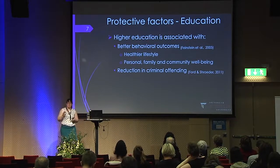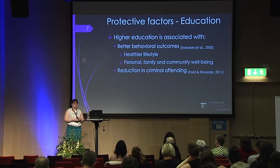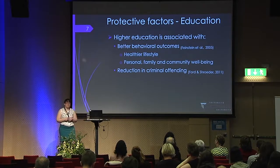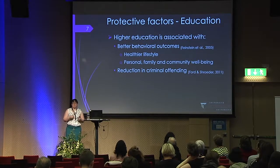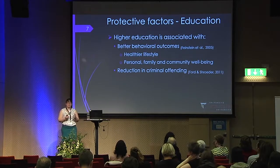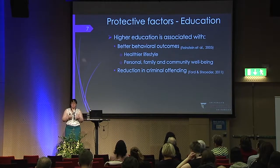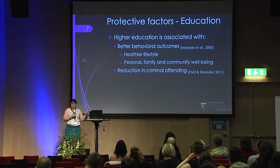In terms of the other factor in the Bronfenbrenner microsystem — schooling — education may play an important role for the developing child. Higher education has been associated with positive outcomes including healthier lifestyles, personal, family, and community wellbeing, and there's strong evidence for education reducing criminality later on in adult life. The more years of education you have, the less likely you are to commit a crime.